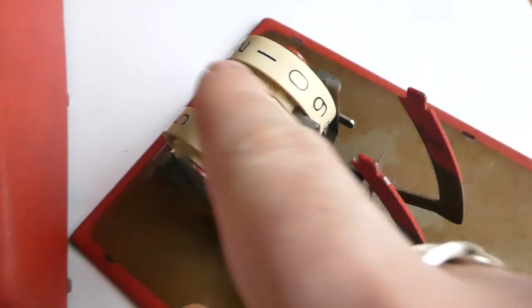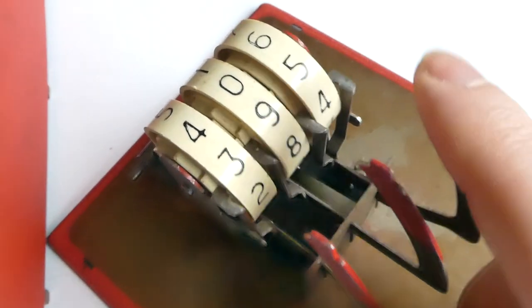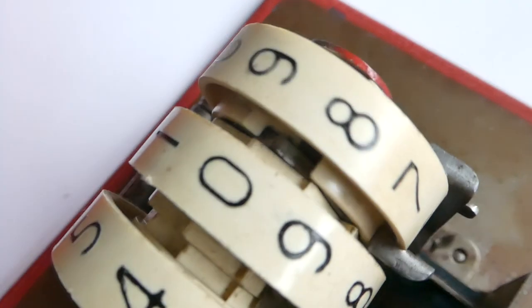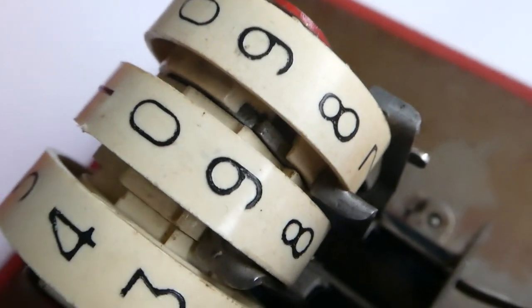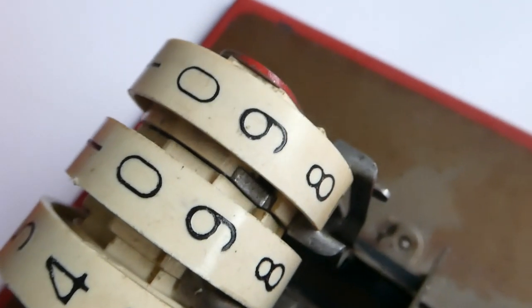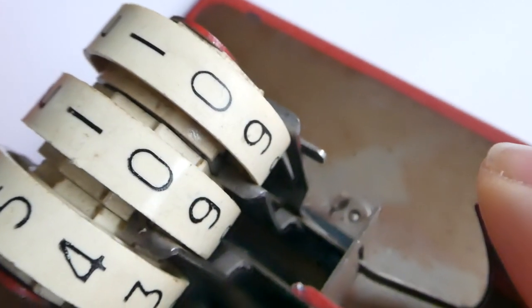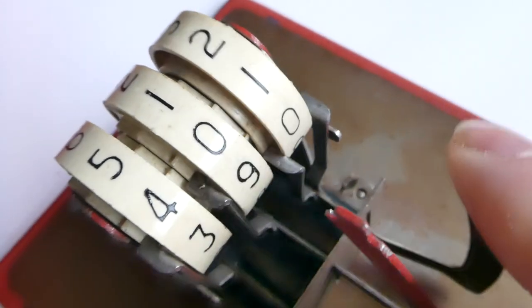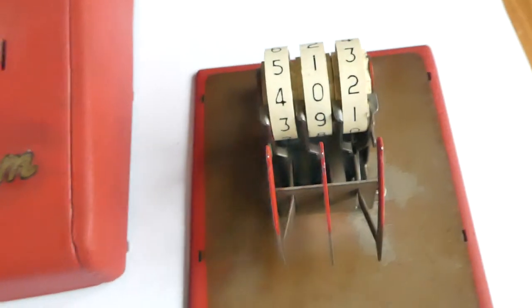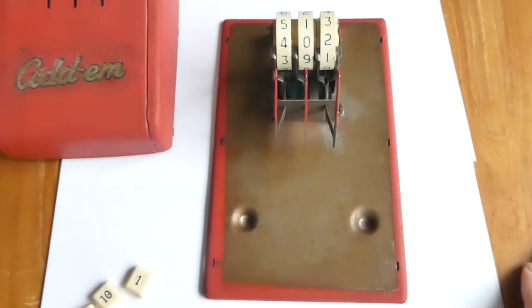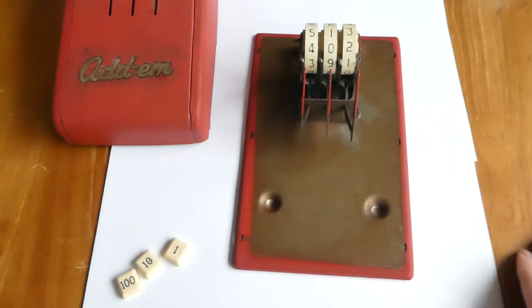So let me show that again. When you reach this gap, the pole can reach down and move the metal wheel underneath. That's the mechanism of the Adam toy calculator. Thank you for watching.